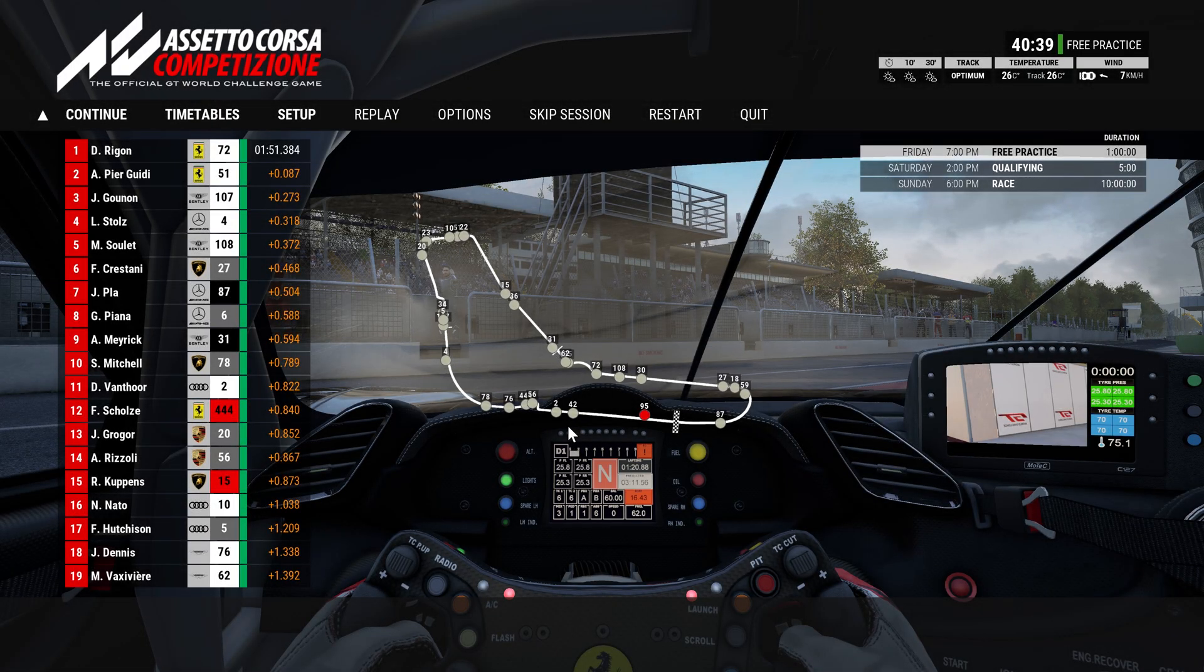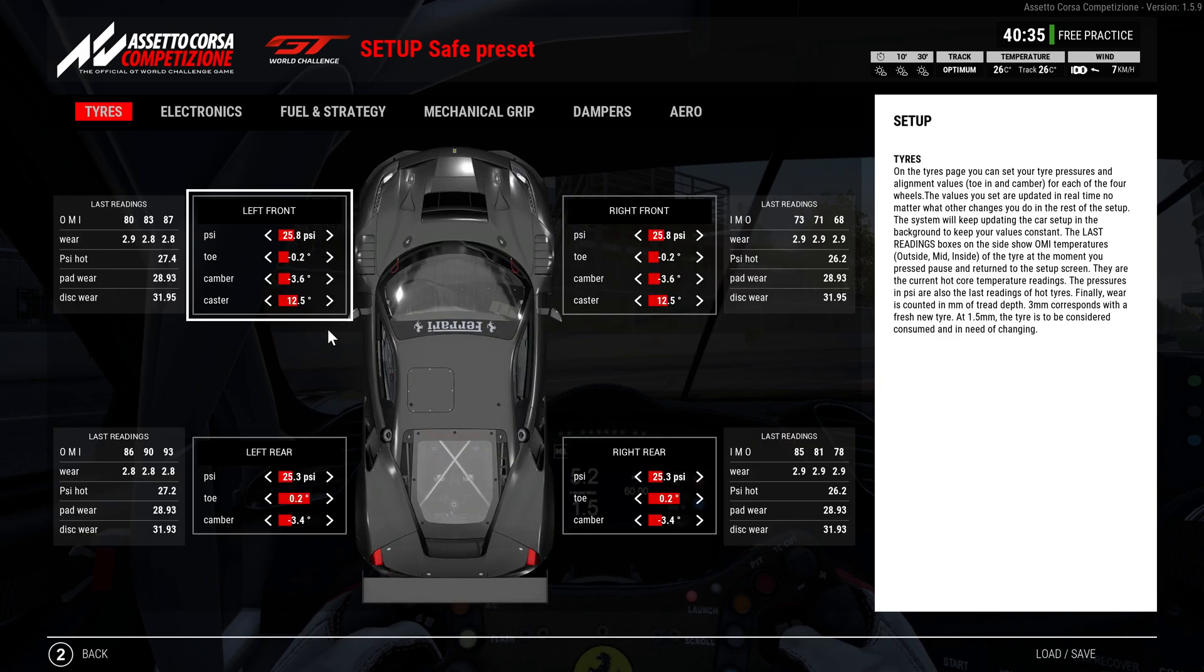So to tune our pressures you go to Setup, Current Setup, and you can change the four corners here in psi. You can read the last measures at the left, you got the outside, middle and inside temperatures.